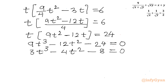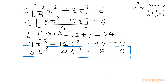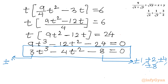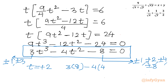This is a cubic equation, which I will solve using the rational root theorem and synthetic division. The eligible factors of the constant term 8 are ±1, ±2, ±4, ±8, and the factors of the leading coefficient 3 are ±1, ±3. Testing t = 2: 3(8) − 4(4) − 8 = 24 − 16 − 8 = 0. So t = 2 is a root.